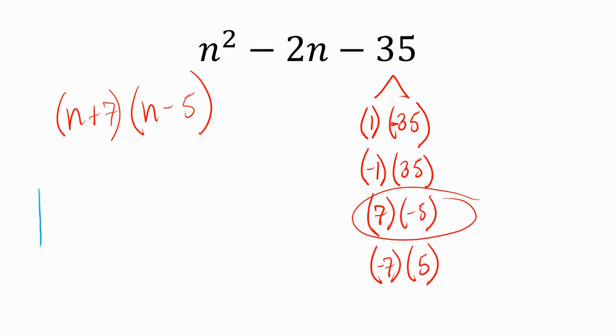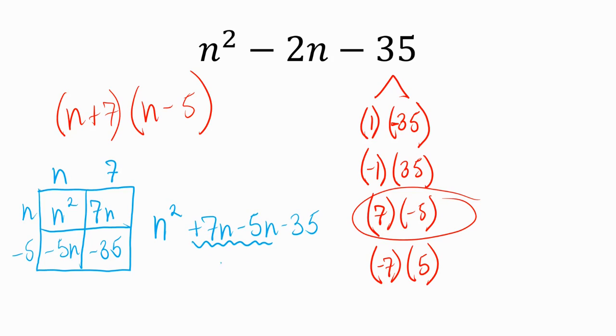But how do I know this is wrong? If I multiply it out, when I combine my like terms, I have 7n minus 5n. That's 2n. So I have plus 2n minus 35. What's different about this versus the original polynomial? It's the middle term. This one is minus 2n, but ours, if we multiply it out, gives positive 2n. So that's how we know this answer is not right.